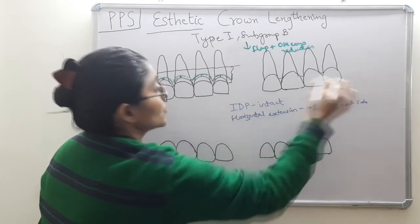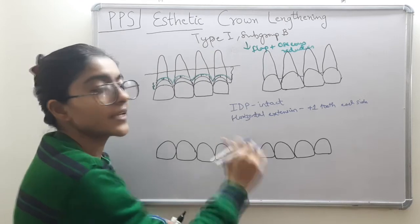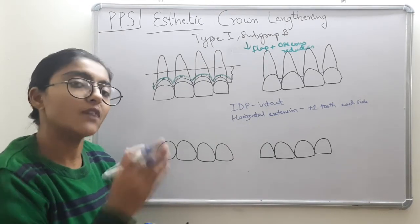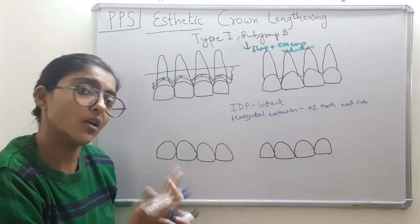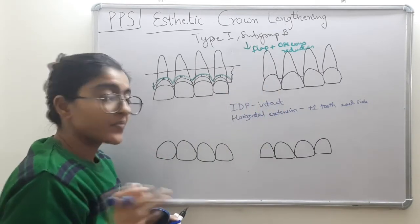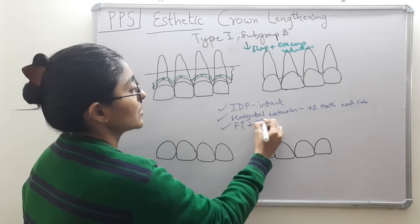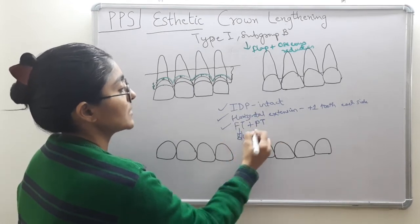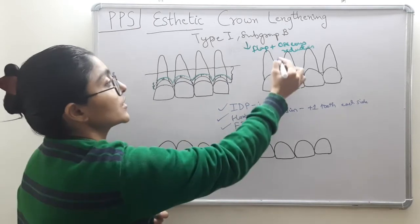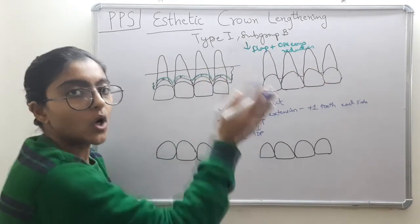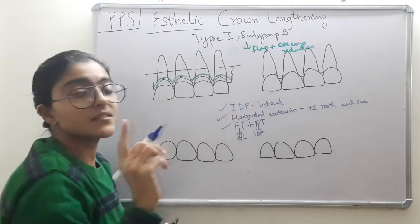To summarize the rules so far: first, interdental papillae are kept intact — no full or partial thickness there, they are left untouched. Second, horizontal extension extends one extra tooth on each side of the visible smile. Third rule is the flap technique: full thickness on the facial/labial aspect — hitting the bone — and partial thickness on the interdental papilla side alternately. So full thickness, partial thickness, full thickness, partial thickness, alternating throughout.